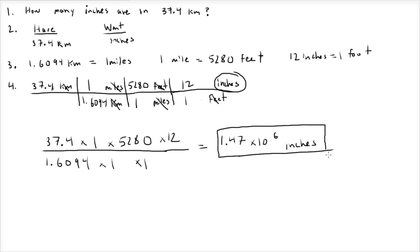A good way to check this just to make sure that you're doing it correctly is just think about it. We're going from kilometers to inches. Kilometers are bigger than inches, so we should be left with a number that's bigger than what we started with. That makes sense because 1.47 times 10 to the 6 is bigger than 37.4.